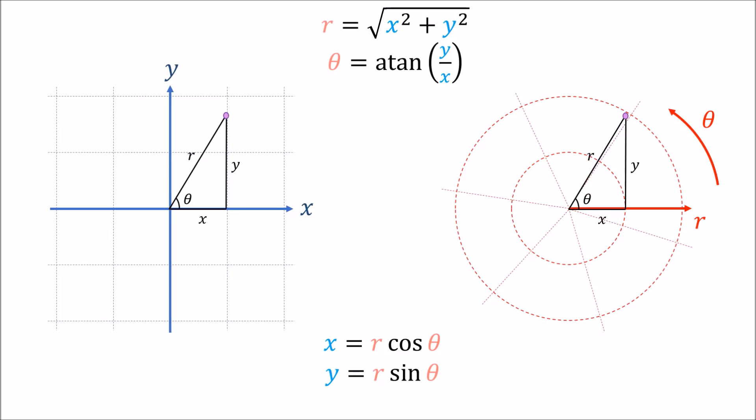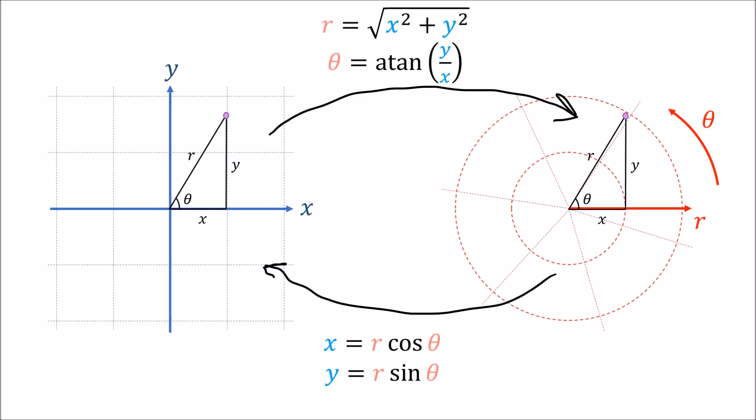So we're able to convert between Cartesian and polar coordinates of a point. The next question to ask is: how do we define basis vectors in Cartesian and polar coordinates?